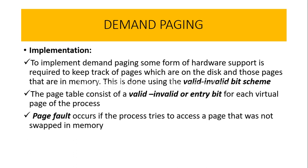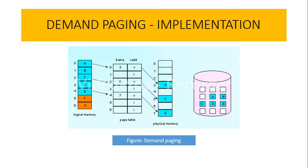Here is the diagram for implementing demand paging. We have the logical memory, the physical memory, and a page table using the valid-invalid bit scheme. The entry bit for pages that have been brought into physical memory is set to V, where V indicates valid. I indicates invalid. The entry bits of pages not currently in memory are marked as I. In logical memory we have all the pages containing data, and the page table keeps track of them.